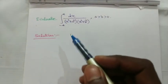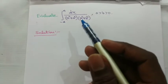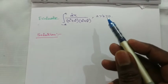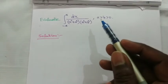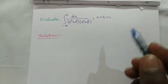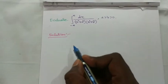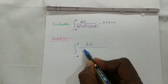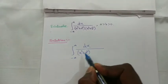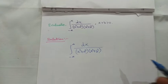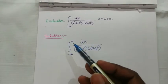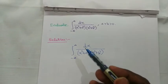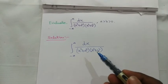Evaluate the integral from minus infinity to plus infinity of dx divided by (x² + a²)(x² + b²), where a > b > 0. So all values are positive, a is greater than b, and b is greater than zero. The given integral is the integral over minus infinity to plus infinity of dx by (x² + a²)(x² + b²). Here p(x) = 1 and q(x) = (x² + a²)(x² + b²).